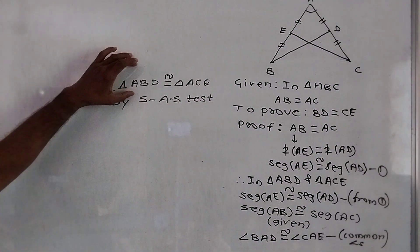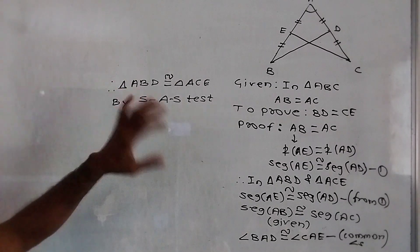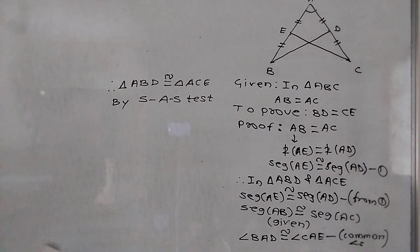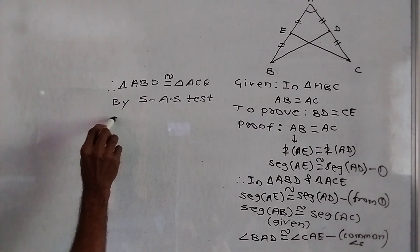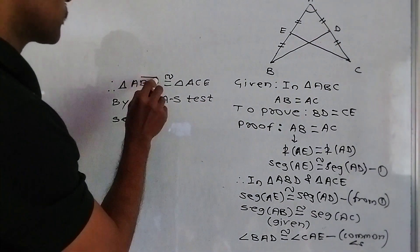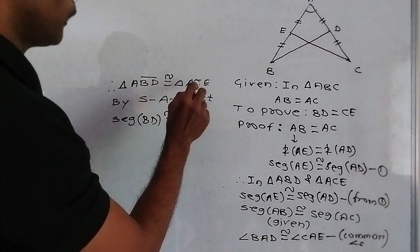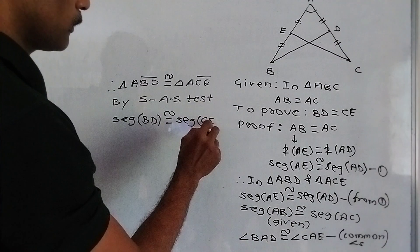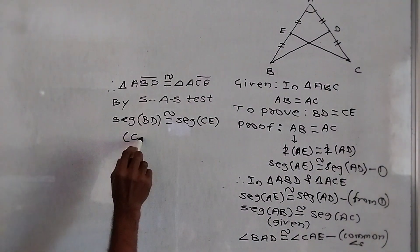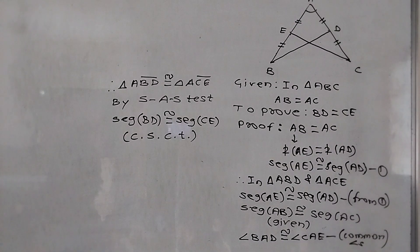If any two triangles are congruent by any test, then the remaining three parts are congruent — as you studied in 8th and 9th standard. Out of the remaining congruent parts, we want only one: segment BD is congruent to segment CE, because these are corresponding sides of congruent triangles.